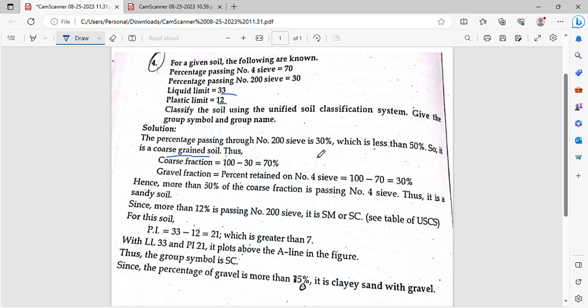30% of the soil has passed, which means 70% of the soil is retained. Since 50% or more didn't pass, it's coarse-grained soil.